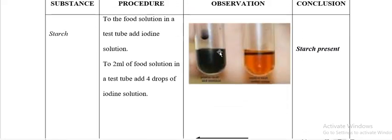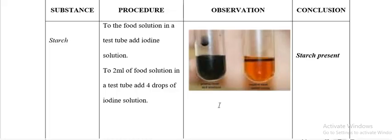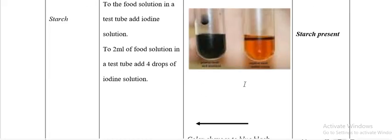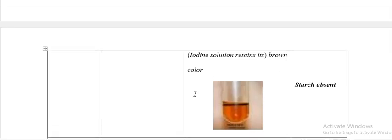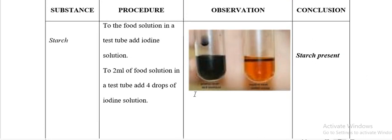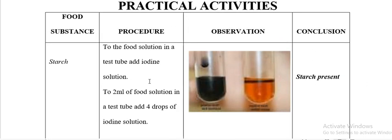Starch will be present when it changes to blue-black from brown colour. If the iodine solution retains its brown colour, it means starch is absent. We shall look at the common mistakes students make when writing this procedure later on.